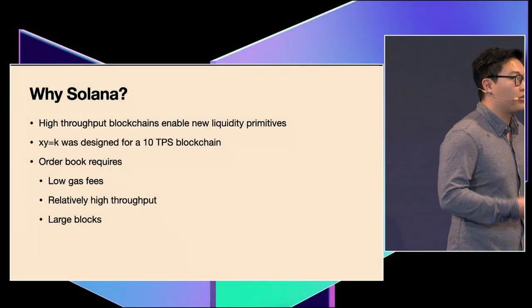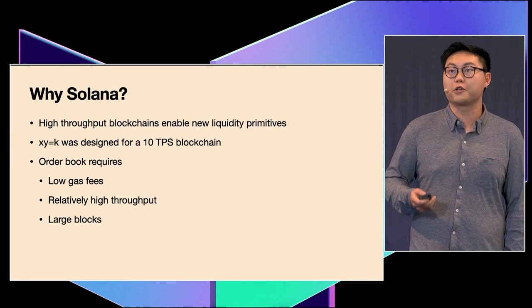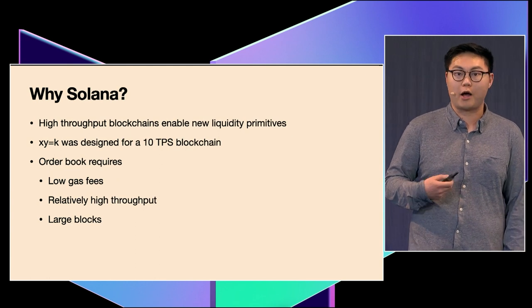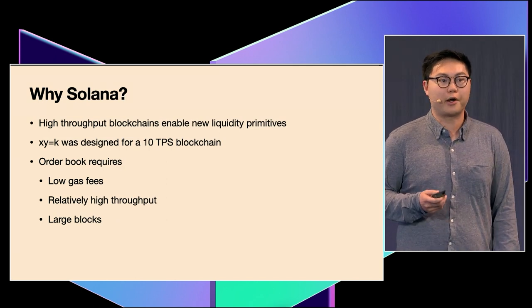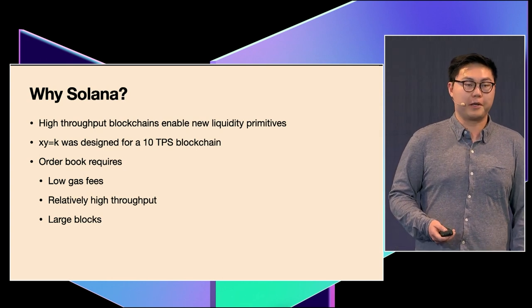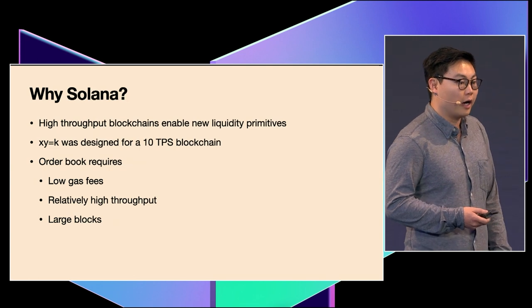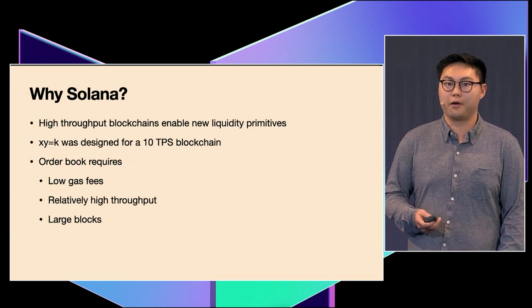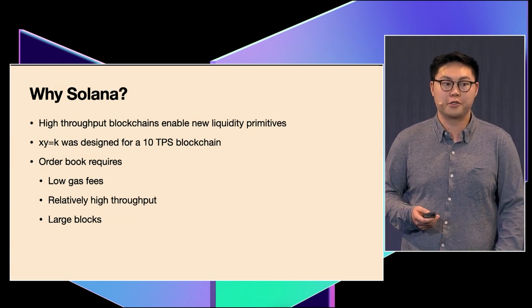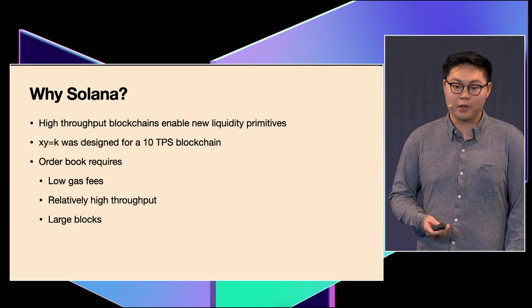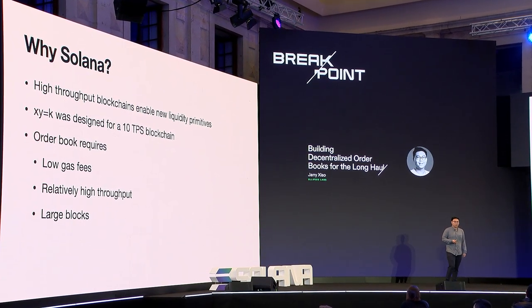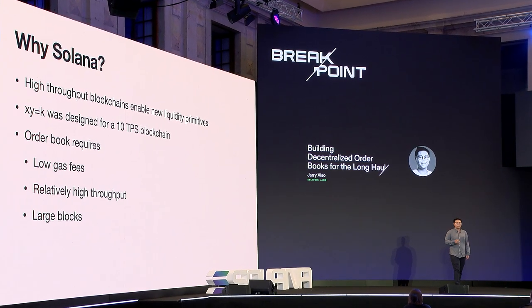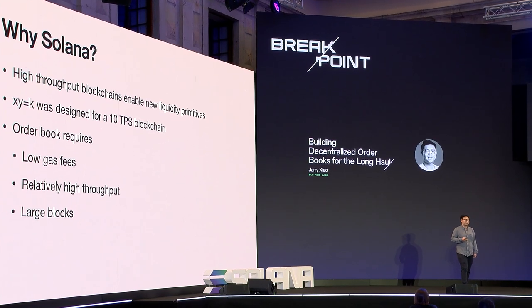Lastly, I want to talk about why Solana. Solana is a high throughput blockchain, and high throughput really enables the creation of new efficient liquidity primitives. On Ethereum, which can process 10 transactions per second, Uniswap introduced the notion of XY=K — a constant product automated market maker. While incredibly innovative, it's designed to meet very narrow constraints and is purely an approximation of how prices truly move. When you have a lot more resources, the design space enables more complex features. An order book is such an example, and it requires low gas fees, relatively high throughput, and large blocks — all three of which Solana provides today on mainnet.